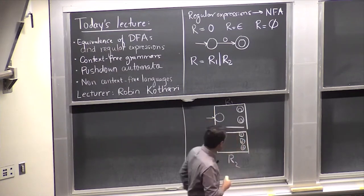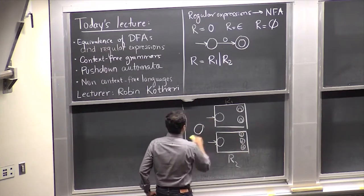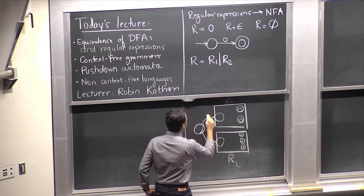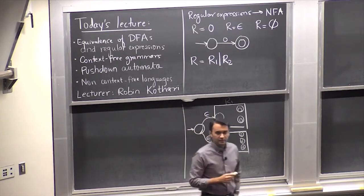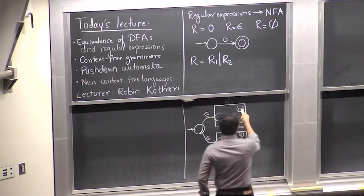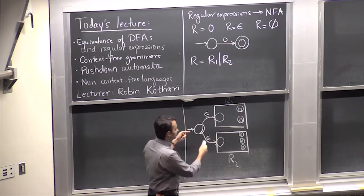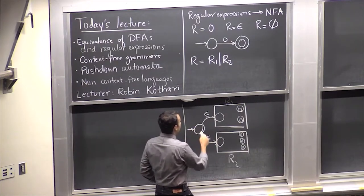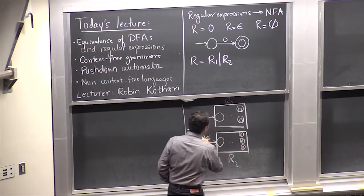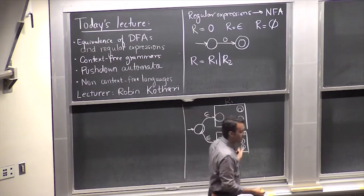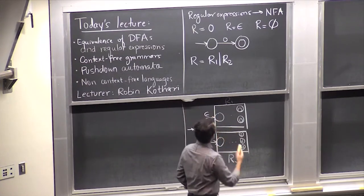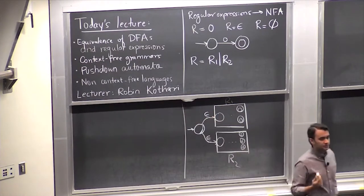Add a start state with a free transition — a null or epsilon transition — to both of these. That's it. You don't need to do anything more. The accepting states remain the same. The reason this accepts the union of the two languages is: if the string is in R1, it could have gone here and done whatever is here and reached one of the accept states. If it's in R2, it would have reached here, done whatever, and reached one of those accept states.